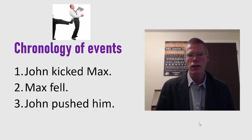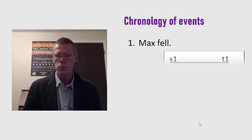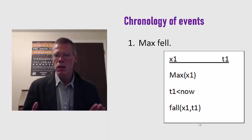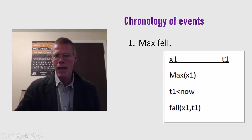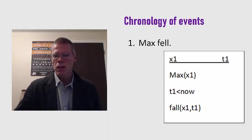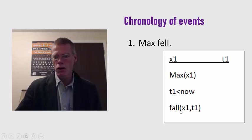Now let's look at how we're going to encode this into a discourse representation structure. We'll begin with 'Max fell' and its typical discourse representation structure. Compared to the previous video, this one is a little more complicated in that I've added a representation for time. We've got our entity x1, which we associate with Max, and then we've got our tense T1, which we say happened before now — that is, it's past tense. The less-than symbol means T1 happened before the present. Then we've got our proposition that x1 fell at time T1.